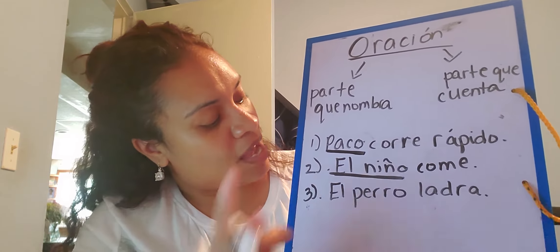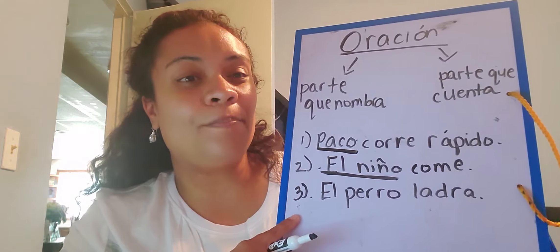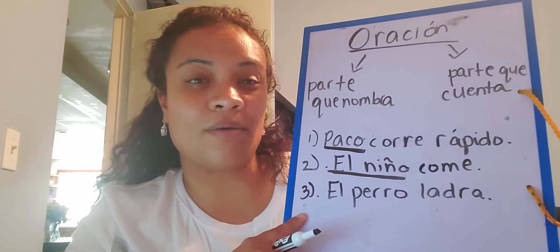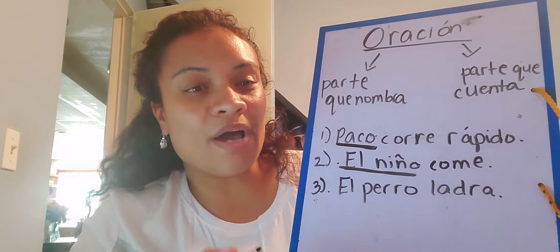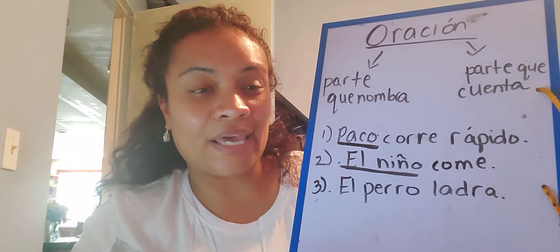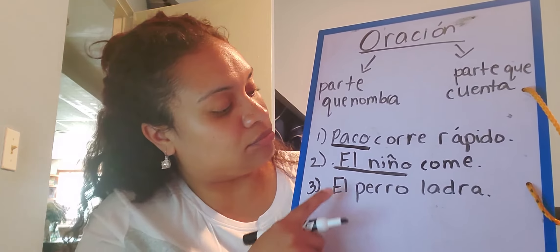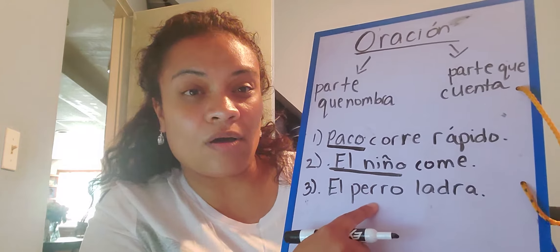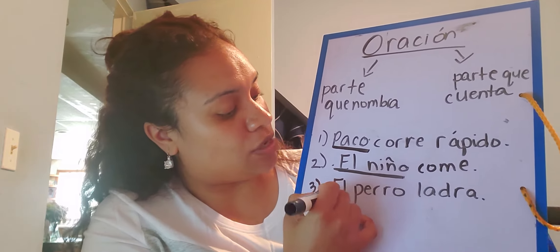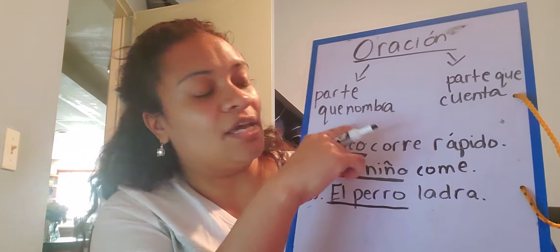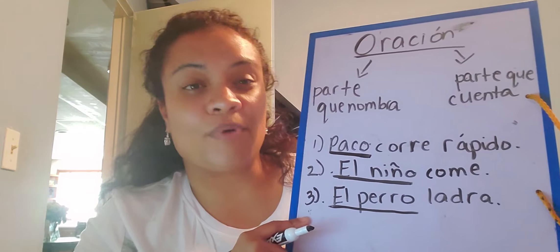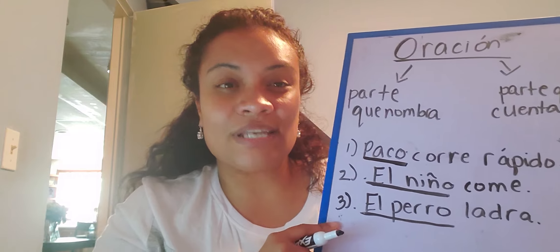And now our last one, boys and girls. El perro ladra. The dog barks. So who or what is the sentence about? De qué o quién se trata la oración? El perro. The sentence is about the dog. So el perro es la parte que nombra. The dog is the part that names.